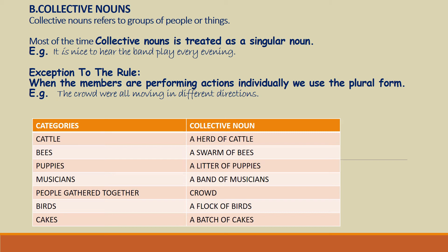Let us look at the following categories and see the corresponding collective nouns. Cattle — a herd of cattle. For bees — a swarm of bees. Puppies — a litter of puppies. Musicians — a band of musicians. People gathered together, we call them a crowd. For birds, we say a flock of birds. And for cakes, we say a batch of cakes.